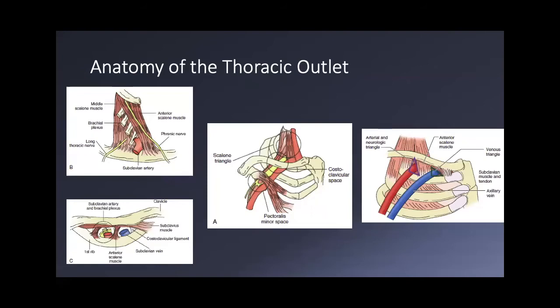Looking down on that space, you can see the clavicle at the top and the first rib at the bottom. Other structures to think about when operating in this area: the dorsal scapular nerve is one of the first branches off the brachial plexus, coming off posteriorly and innervating muscles around the scapula like the rhomboids. The cervical sympathetic chain is also very important to consider.